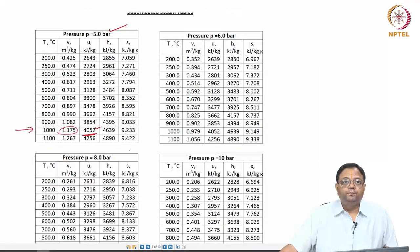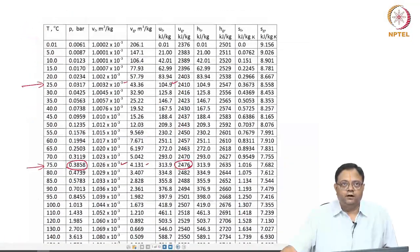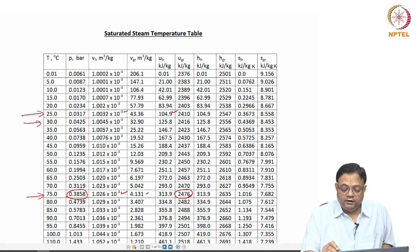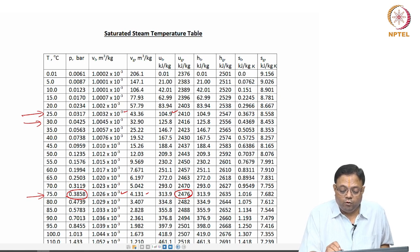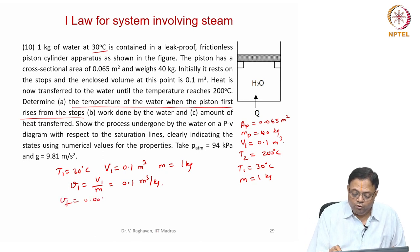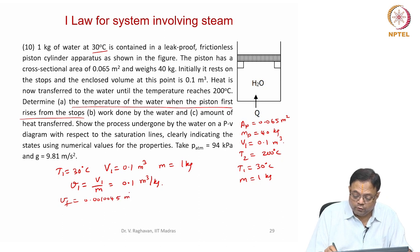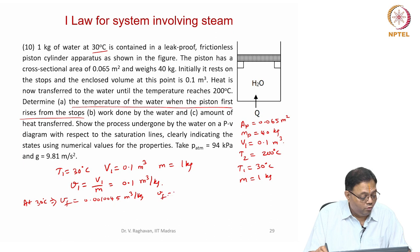Going to the temperature-based saturation tables, at 30°C the saturation pressure is 0.0425 bar. The Vg value is 32.9 cubic meters per kg and Vf is 0.0010045 cubic meters per kg. So now the state is saturated because Vf = 0.0010045 and Vg = 32.9 cubic meters per kg at 30°C.